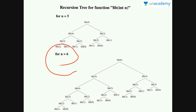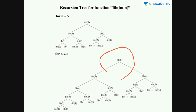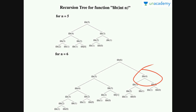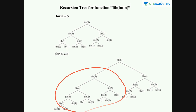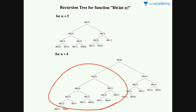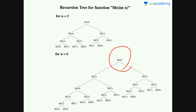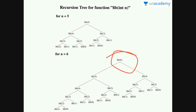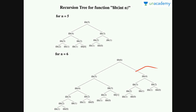For n equal to 6, if we draw the recursion tree of Fib(6), then Fib(6) will first break into two parts: Fib(5) and Fib(4). These are nothing but the sub-problems of our main problem Fib(6). We can see here that Fib(4) is called by Fib(6) — it is the right child of Fib(6) — and Fib(4) is also called by Fib(5) as its right child. So these sub-problems overlap with each other.